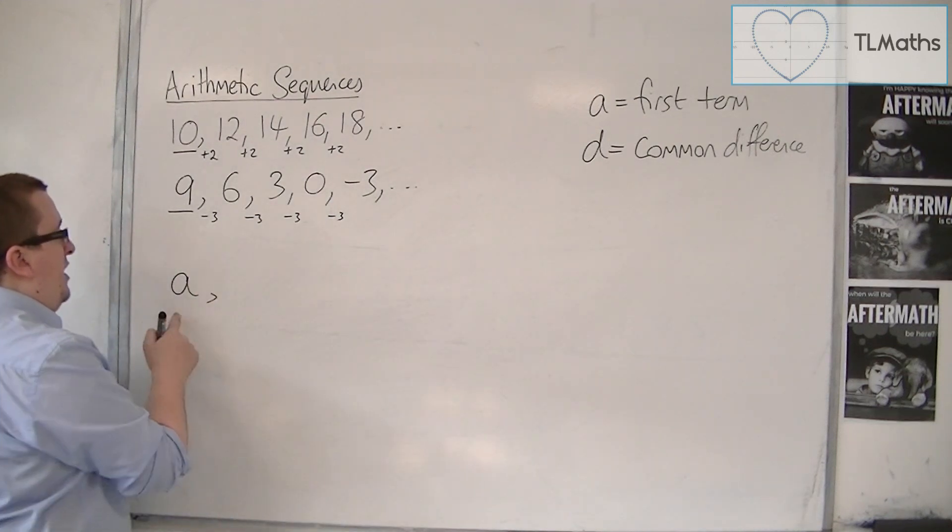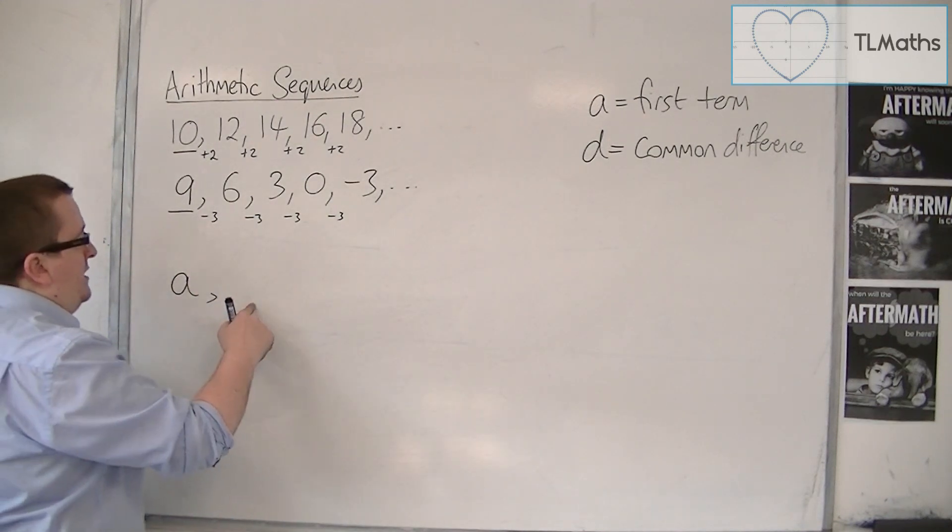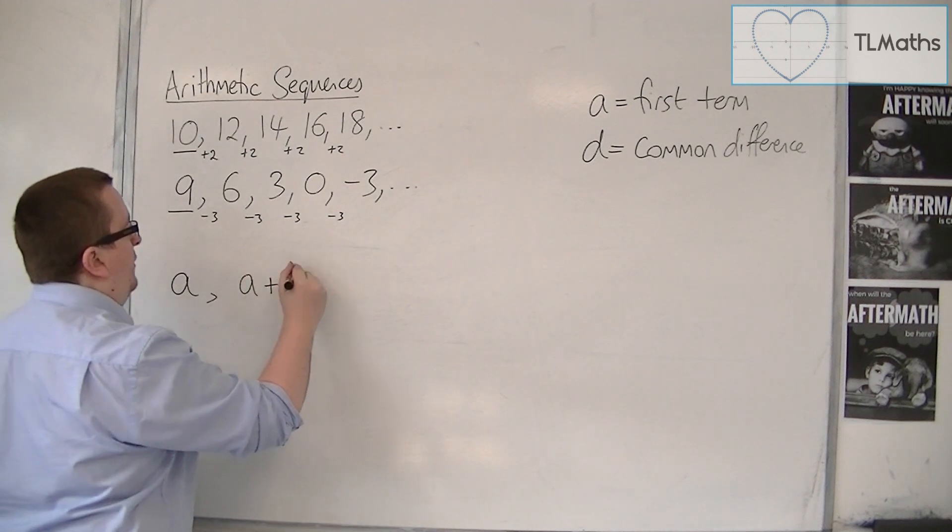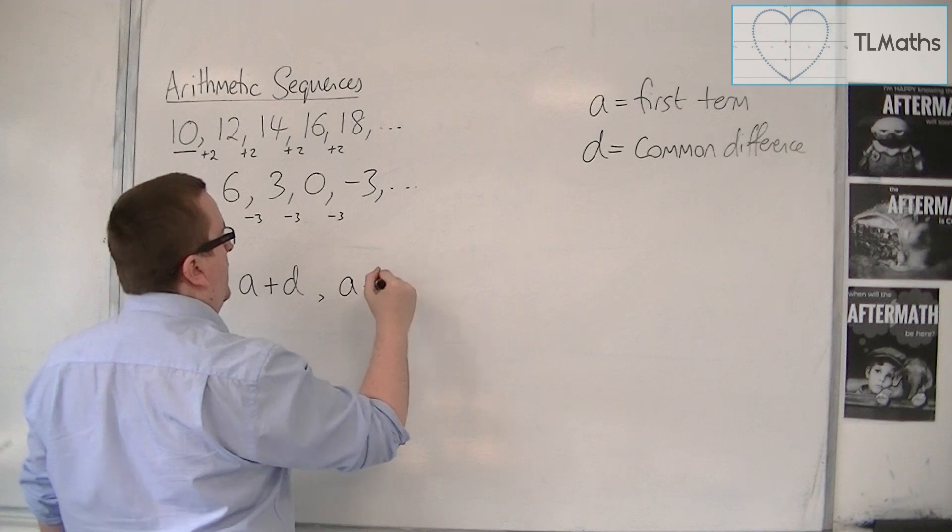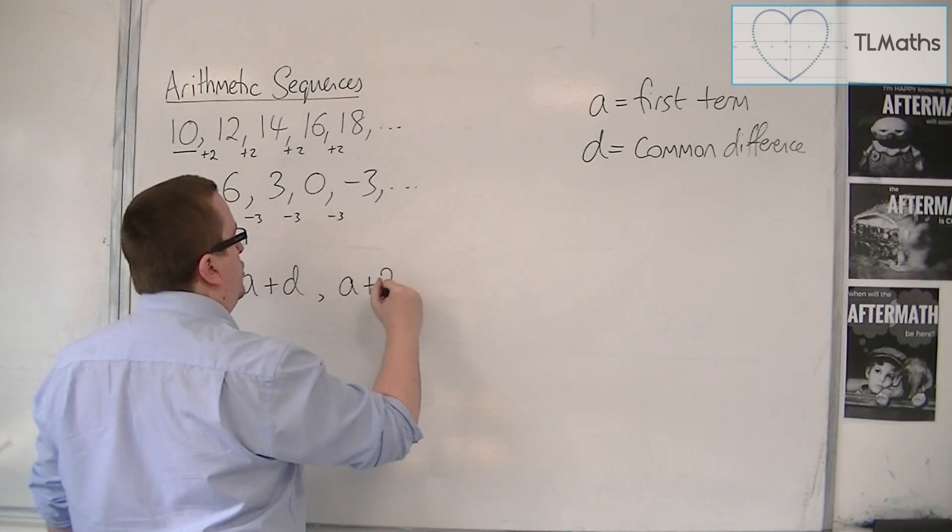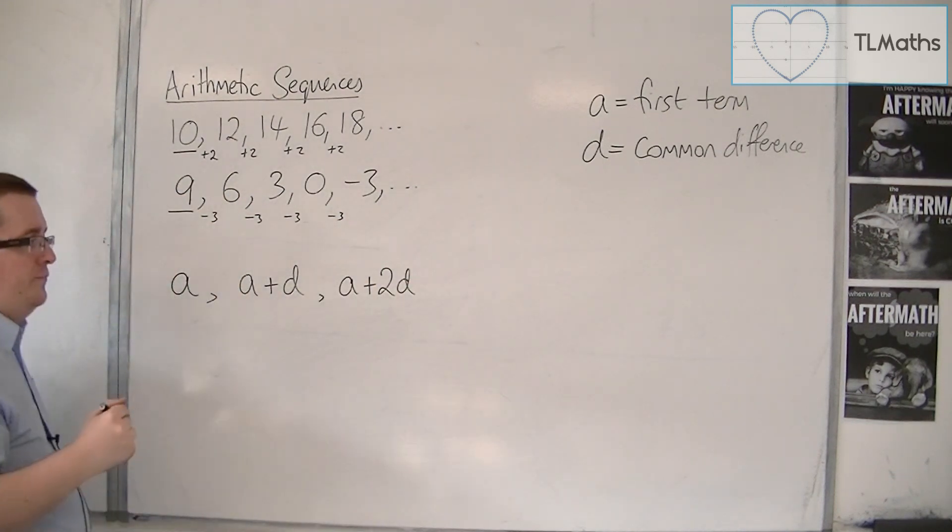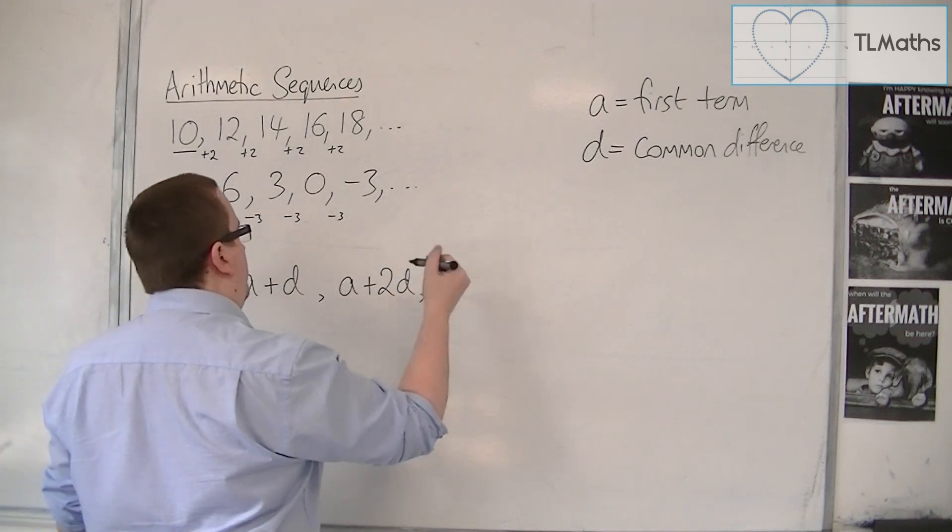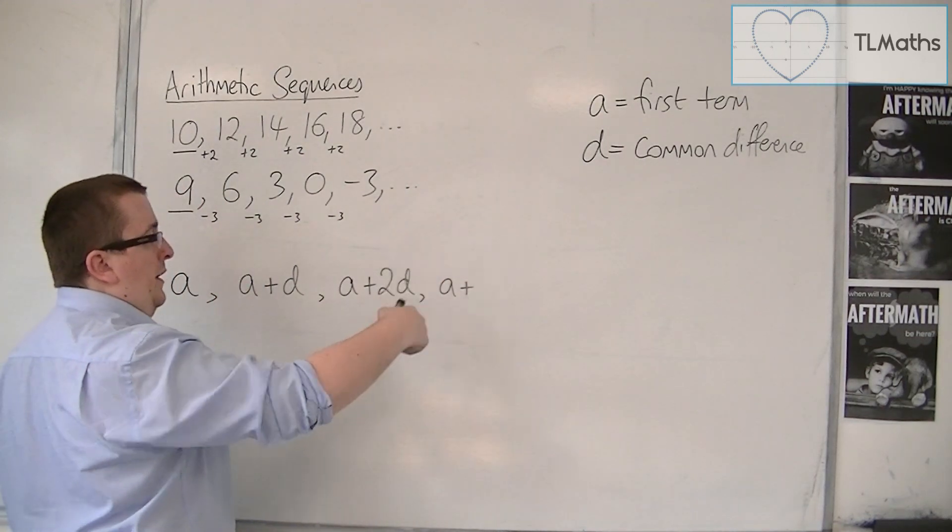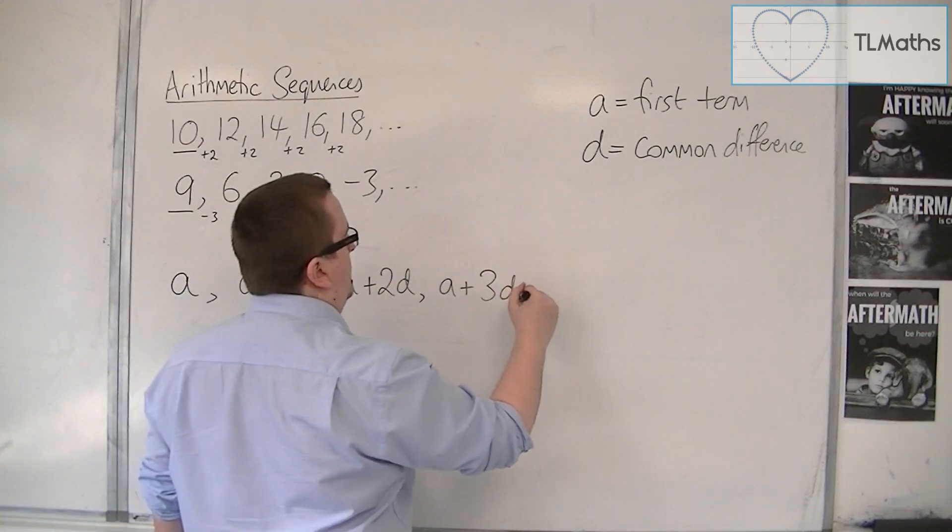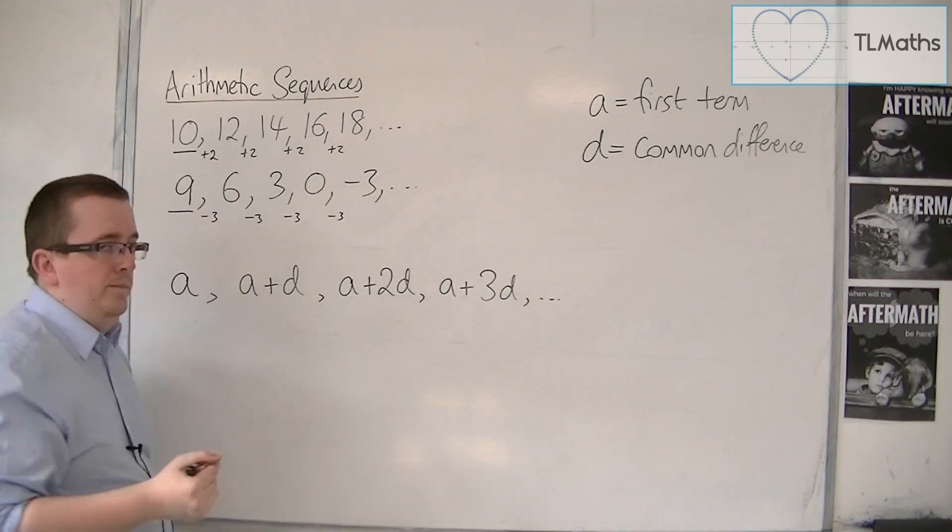So if our first term is A, then the second term will be A plus D. The third term will be A plus D plus D, which is A plus 2D. And the next term is A plus 2D plus D, so A plus 3D and so on.